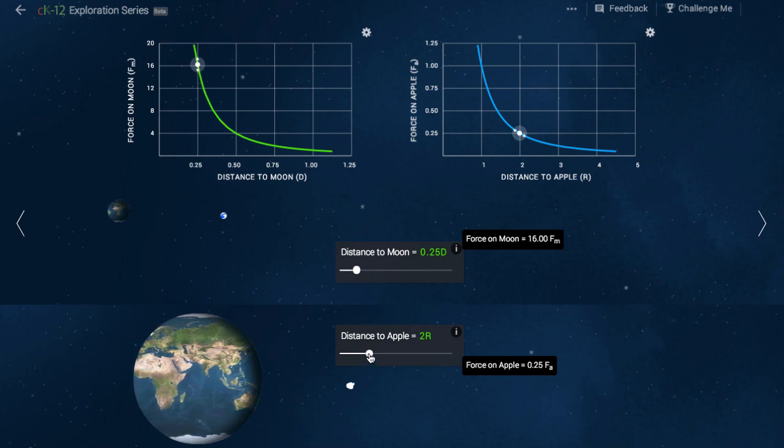When moving the apple, we see the same effect. Doubling its distance decreases the force acting on it by a factor of four. The distance in this case is from the center of the apple to the center of the earth.